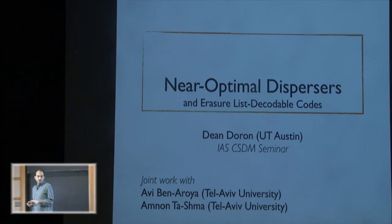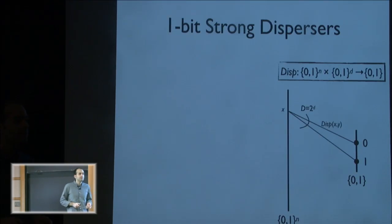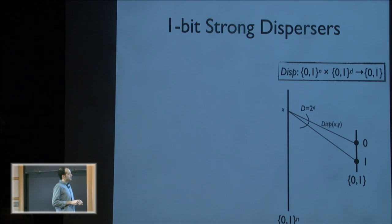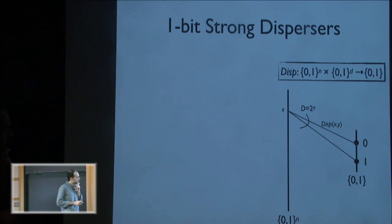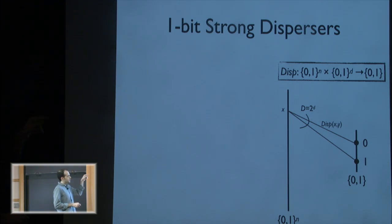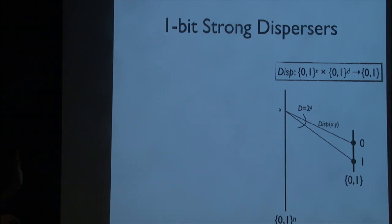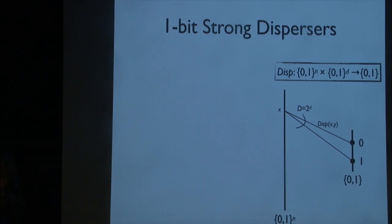Let's define what a strong disperser is. It's a function that gets two inputs: the first is of length n, the second is of length d. We treat this function as a bipartite graph where the first input is on the left-hand side, the second input is written on the edges — so it's a 2-to-the-d out-regular graph. On the right-hand side we only have 0 and 1, so it only outputs one bit.